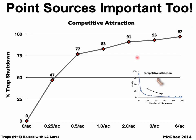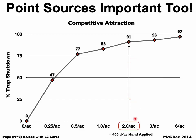Peter determined that to achieve the same efficacy as 400 hand-applied dispensers per acre, you would need about two aerosol emitters per acre — though this was done in 10-acre blocks. In larger blocks of 100 or 1,000 acres, emitters will work better. But in his 10-acre block experiments, it took about two units per acre to equal 400 dispensers of hand-applied.